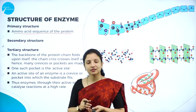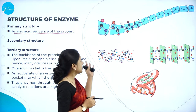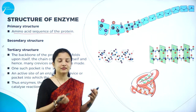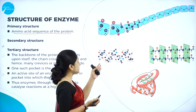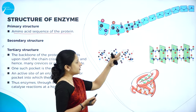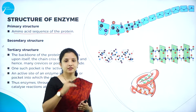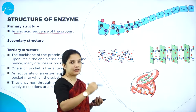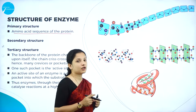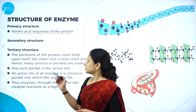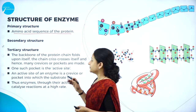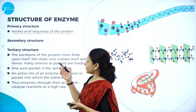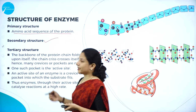The secondary structure involves some form of helical arrangement — twisting and coiling of that linear structure. That twisting and coiling to some extent is the secondary structure of the enzyme.